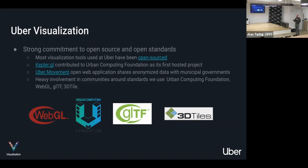Another product from the viz team is Uber Movement — it's not so much about open source but about opening our data up in an anonymized, aggregated way. We have a web application that anybody can visit, but the primary customers are municipal governments. We release data about our trips — the two products out there now are trip duration and speeds — so that municipal planners can understand how people are moving through their cities.